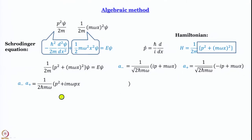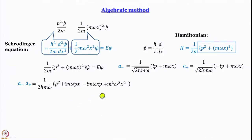Next we get (ip)(mωx) = imωpx — note this ordering is important. Then (mωx)(mωx) = m²ω²x², where x is an operator. Finally (mωx)(−ip) = −imωxp. So inside the bracket we have: p² + imωpx − imωxp + m²ω²x². That is your a⁻a⁺.